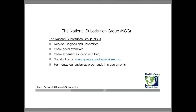The next tool is a very good network we have in Sweden called the National Substitution Group — a network of regions and universities focused on chemical issues, not just disinfectants but all kinds of chemical issues. We share good examples: if somebody has found a useful substitution, we can share it with others. We also share experiences — both good and bad. As I say, you learn a lot from bad experiences, but you don't have to learn from your own; you can learn from others' experiences too. You can also find a substitution list there.